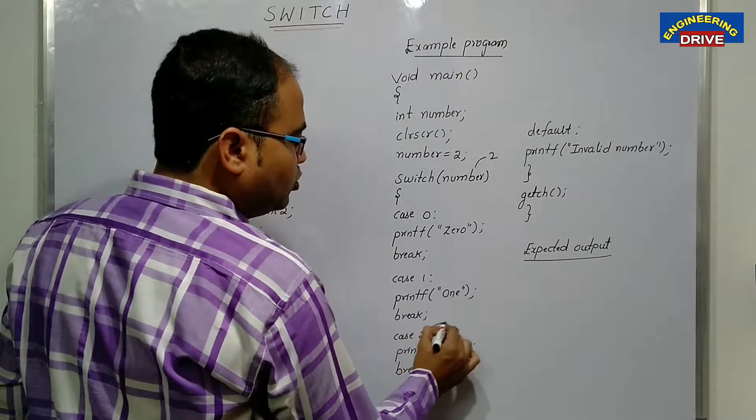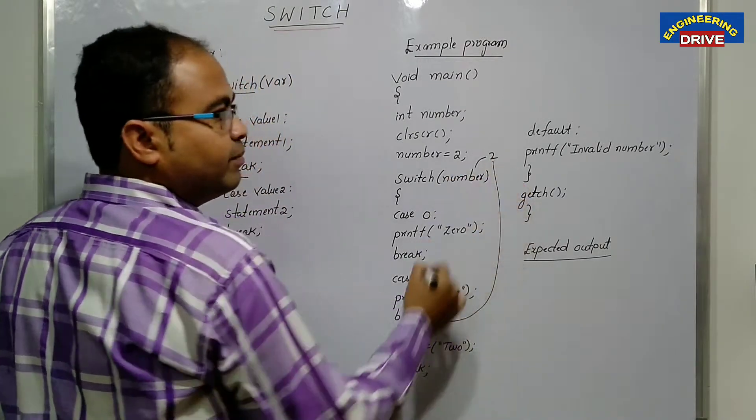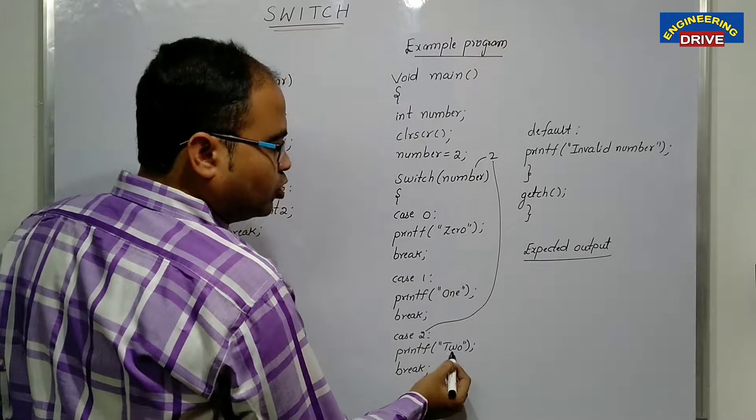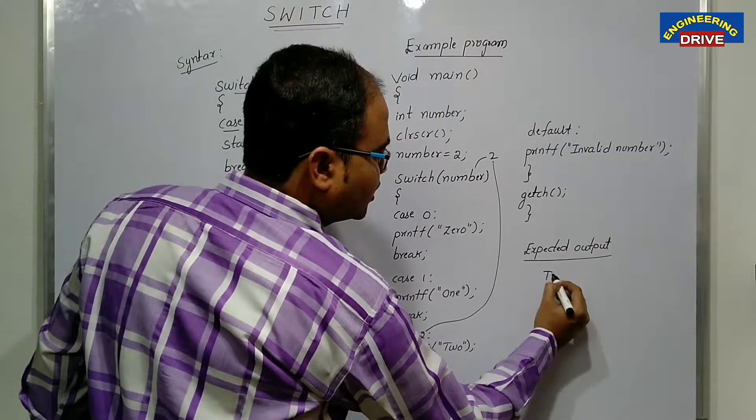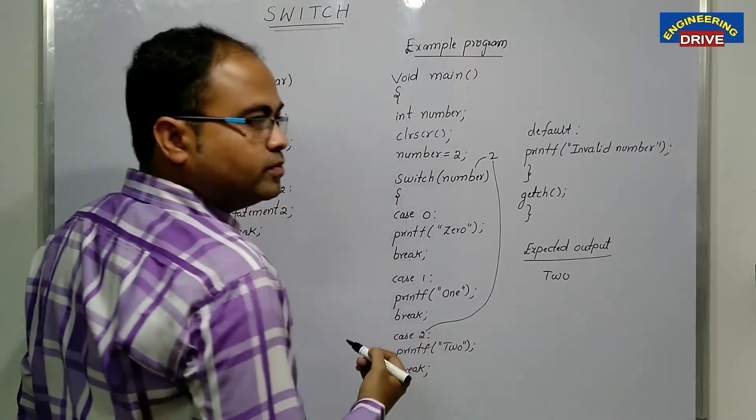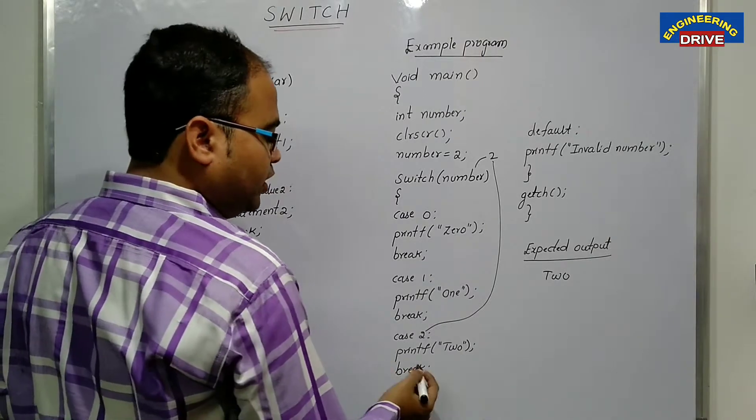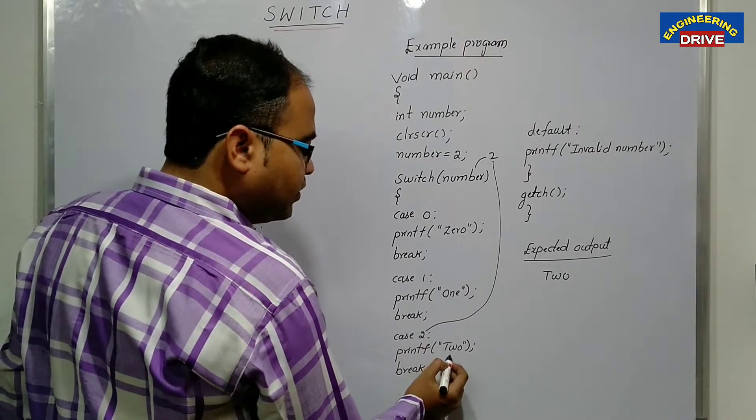Now this two and this two, they are getting matched now. So what is there inside this case two? Two. So you will get output on the screen two. That is your expected output.